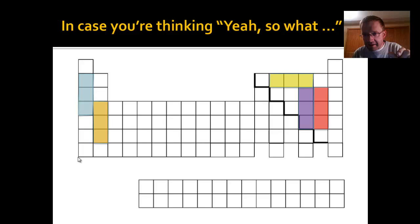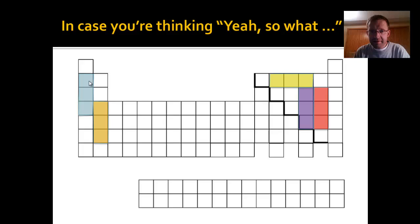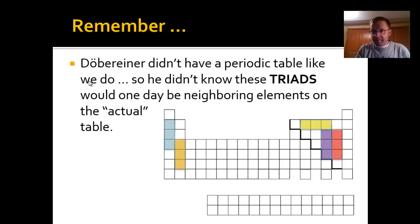If you look at the periodic table today, those five groups of three elements are highlighted as sets of three all over the table. The important thing is that Döbereiner, in the early 1800s, did not have this periodic table. He was putting together three elements 200 years ago that we now find are, in fact, neighbors on the periodic table. It's like predicting they'd be a set of three before knowing, 200 years later, that they'd show up as a group.